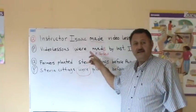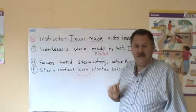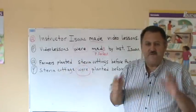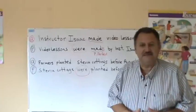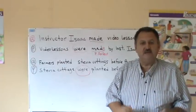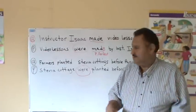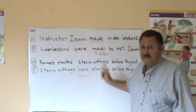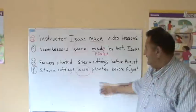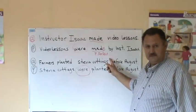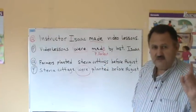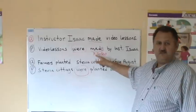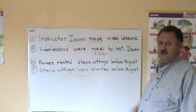Were. Notice that we use the past of the verb be. In passive voice, the verb be determines the time tense. So in this case, were is in the past. So, video lessons were made — and made here is not in the past; now it's in the present perfect. Video lessons were made by Instructor Isaac.